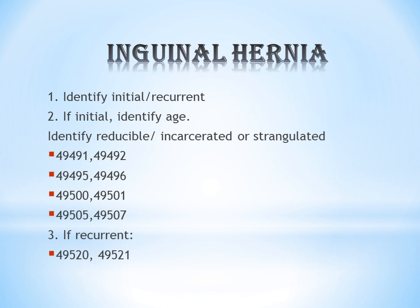For inguinal hernia, first identify whether it is initial or recurrent. If the hernia is occurring repeatedly, it is recurrent; if it is the first time, it is initial. If it is initial inguinal hernia, the next step is to identify the patient's age, because the codes are divided by age groups: preterm up to six months, term birth up to six months, six months to five years, and five years or older.